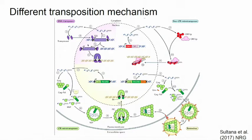Finally, you have the non-long-terminal repeats, which build ORF1 and ORF2 proteins. They bind the mRNA, and this complex enters the nucleus, where reverse transcriptase acts directly at the site of integration — called target-primed reverse transcription. DNA transposons don't have an RNA intermediate because the DNA is moved directly, whereas the LTR and non-LTR elements have an RNA intermediate.